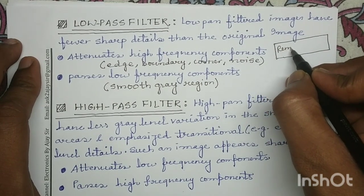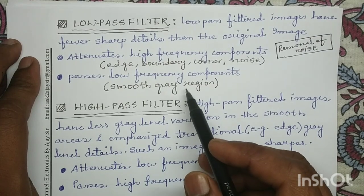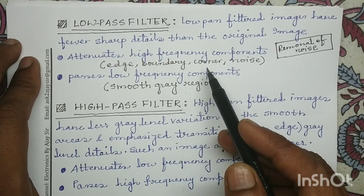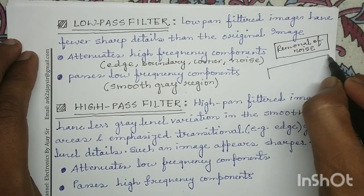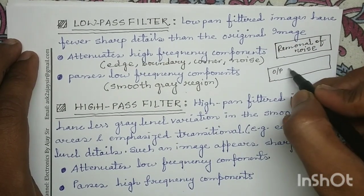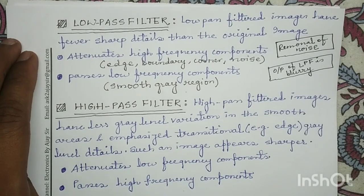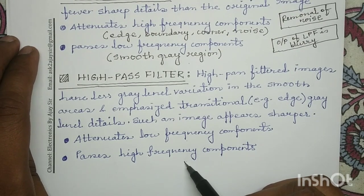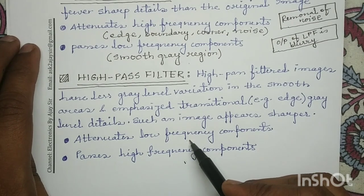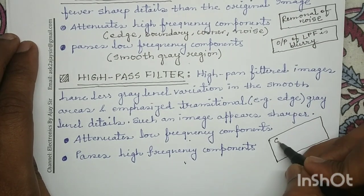The low pass filter passes smooth gray regions but attenuates edges, boundaries, and corners, so the output of a low pass filter is usually blurry in nature. In contrast, the high pass filter passes high frequency components — that is, edges, boundaries, and corners — while attenuating the smooth gray regions. Therefore, in the output of a high pass filter we obtain edges, and hence the high pass filter can be used for edge extraction.